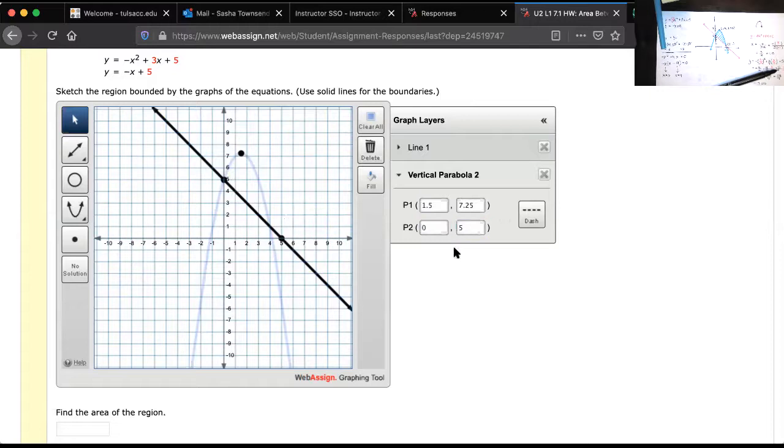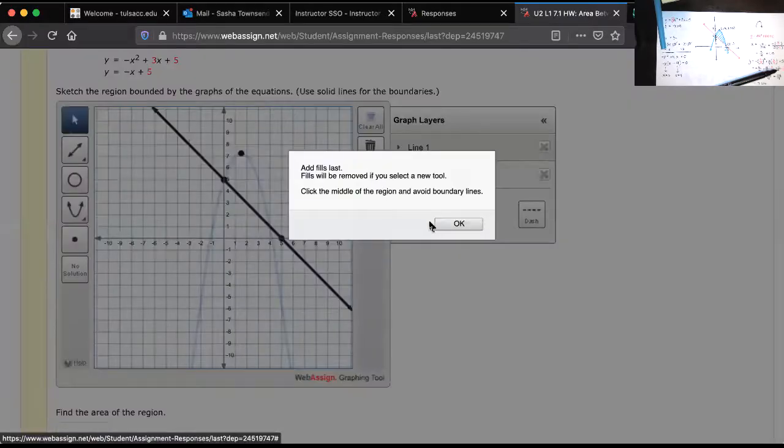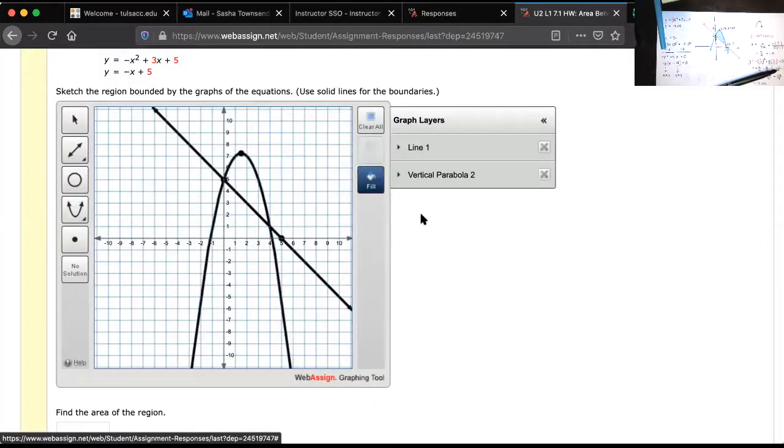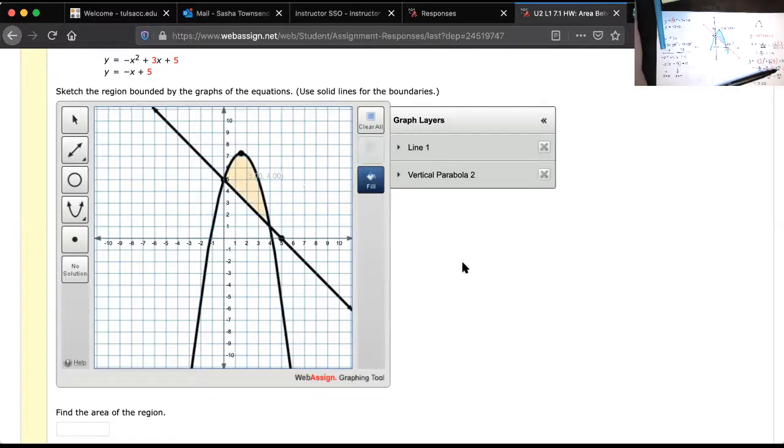I don't want dashed. I want solid. And now we want to sketch the region bounded by those equations. So, we want to fill in that space right there. It says add fills last. Fills will be removed if you select a new tool. Okay. And then we just want to fill here. And then it asks us to find the area of the region.